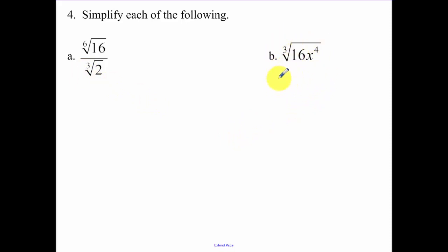Break down 16x to the 4th into perfect cubes. So that's going to be 16. 16 is 8 times 2. 8 is a perfect cube, 2 is not, but they multiply to be 16. Why did I leave that space there? I left a space for x to the 3rd times by x. This 8x cubed can break out. The cube root of 8 is 2. The cube root of x cubed is x. Those break out, and underneath my radical I'm left with a 2x.